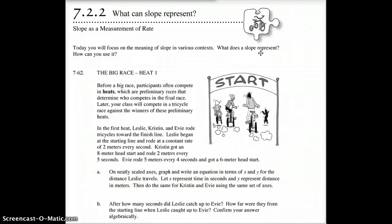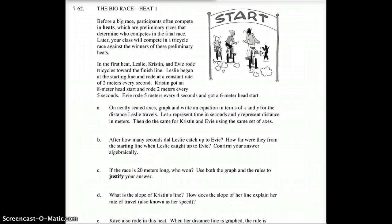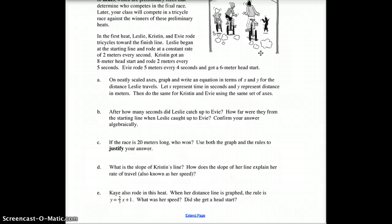We're going to get to a problem called the Big Race. Here is heat one of the Big Race. Question number 62: Before a big race, participants often compete in heats, which are preliminary races that determine who competes in the final race. Later, your class will compete in the tricycle race—you won't literally get on a tricycle, we just don't have tricycles for that.